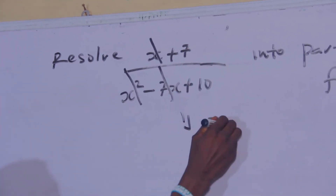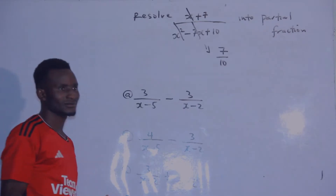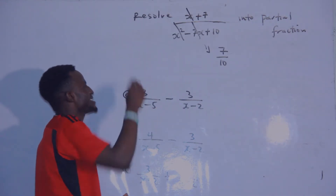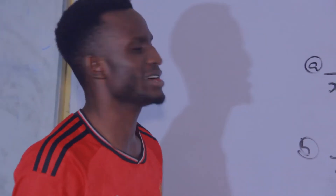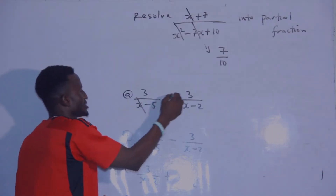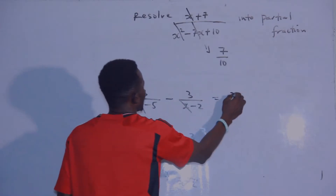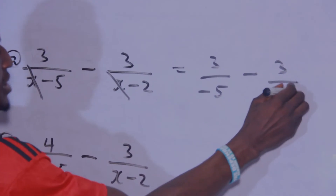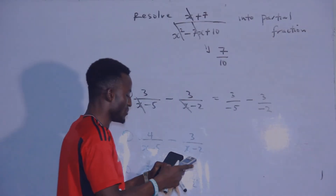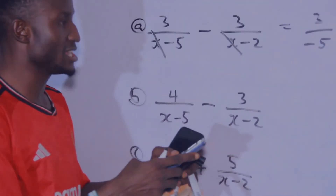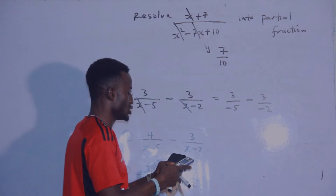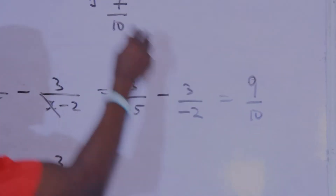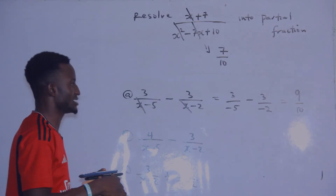Starting with the question: I cancel x out here. Anything attached with x — observe that the only values that remain are 7 over 10. I'll now go with the same option that has the same answer as 7 over 10 — that is my right answer. Canceling this out, the remaining values are 3 over negative 5, minus 3 over negative 2. Pressing this on the calculator gives 9 over 10, not 7 over 10, so this is not the answer.